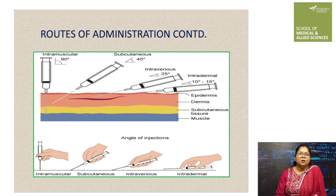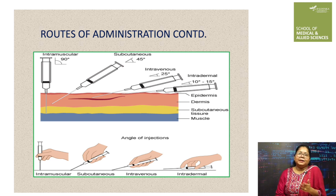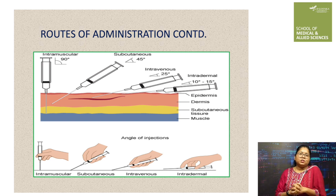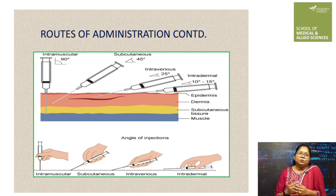The muscles also contain large blood vessels and nerves, so it is important to place the needle correctly to avoid damage to these structures. Intramuscular injections are administered at a 90-degree angle with a 22 to 25 gauge needle.